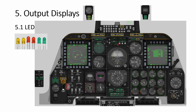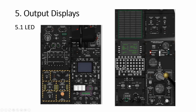For output displays, the simplest kind are LEDs in different colors — green, yellow, red, whatever. You can see many on the A-10 warning displays. More complex ones like the CDU use an LCD. These more complex displays require lines and lines of code in DCS BIOS.